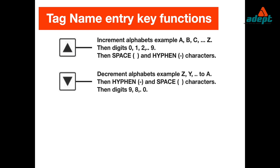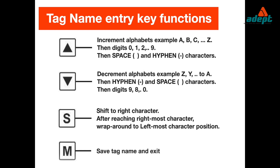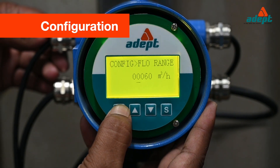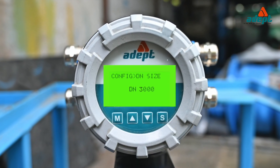Down arrow key decrements alphabets, for example Z, Y up to A, then hyphen and space characters, then digits 9, 8 up to 0. S key shifts to the right character; after reaching the rightmost character it wraps around to the leftmost character position. M key saves the tag name and exits configuration. Set pipe size as required, DN10 to DN3000.